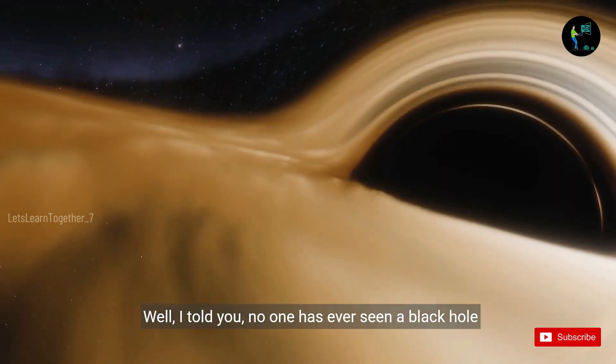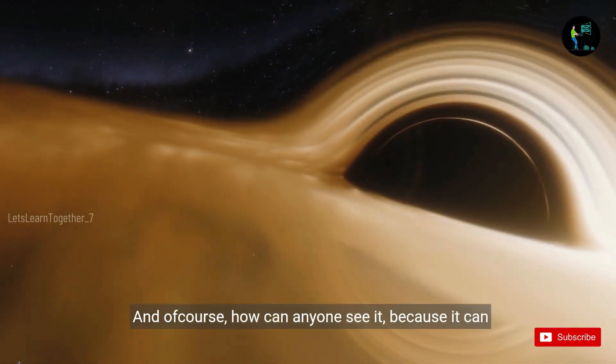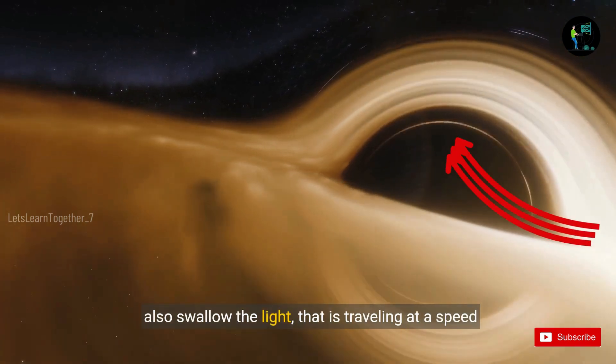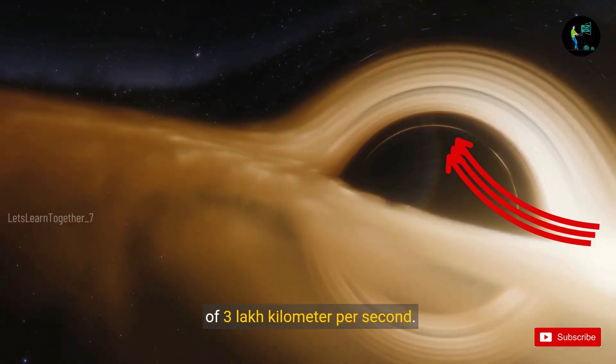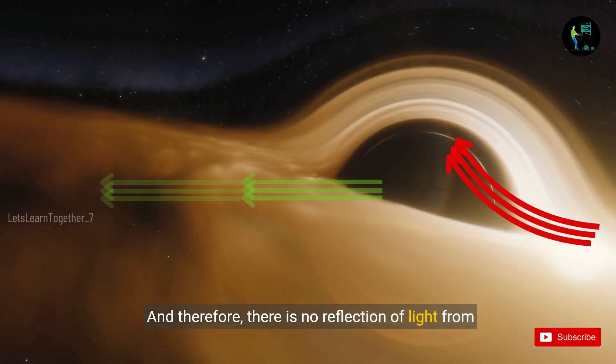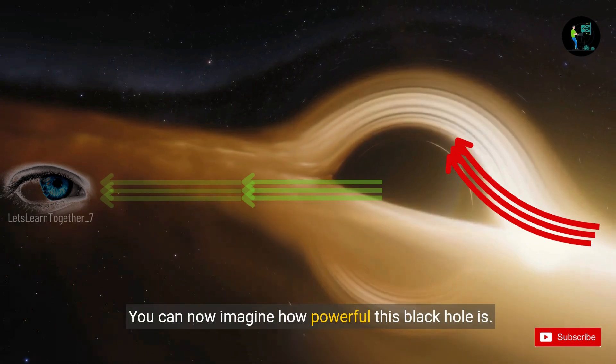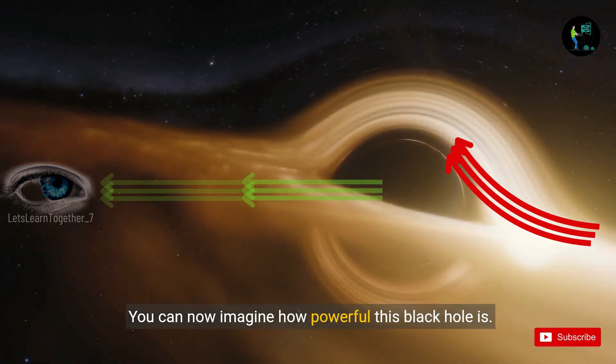Well, I told you, no one has ever seen a black hole until 2018. And of course, how can anyone see it? Because it can also swallow the light that is traveling at a speed of three lakh kilometers per second. And therefore, there is no reflection of light from a black hole. And hence, you are not able to see a black hole. You can now imagine how powerful this black hole is.